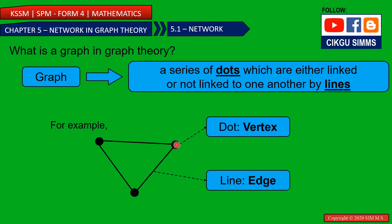For the dots, we call it a vertex. For the line, you call it an edge. You need to remember these two terms: the vertex and the edge.